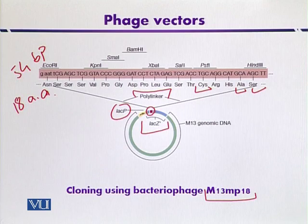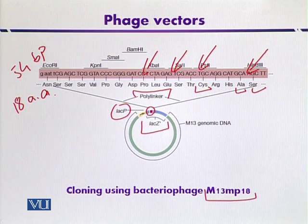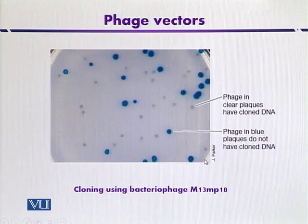The poly linker molecule contains different cloning sites for different types of restriction enzymes. Foreign DNA can be inserted at these sites. When foreign DNA is inserted, it causes inactivation of the lacZ gene, and if beta-galactosidase is not produced, it indicates that the foreign DNA has been inserted successfully.